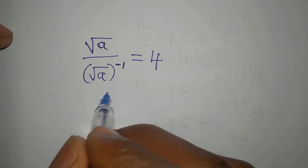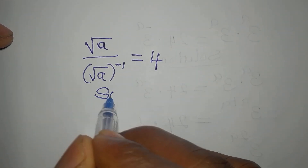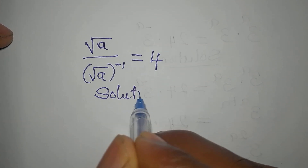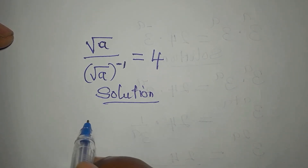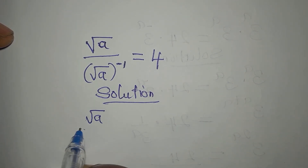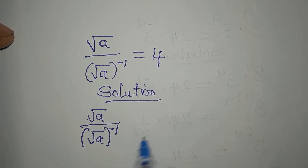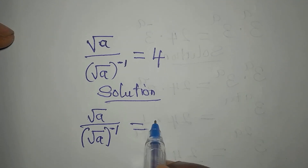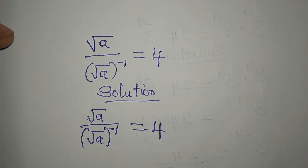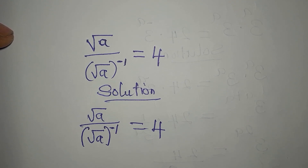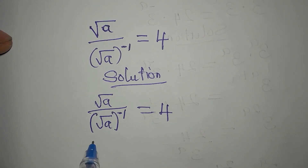Hello everyone. Let's provide the solution to this problem: square root of a over square root of a to the power of negative one equals four. This looks confusing but it is very simple. I'm going to do this in two ways, so let's look at the first method.